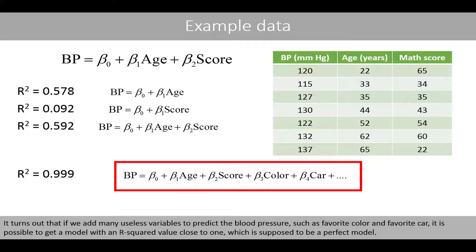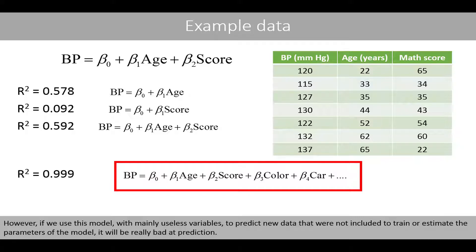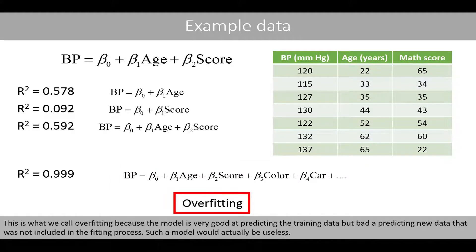It turns out that if we add many useless variables to predict the blood pressure, such as favorite color and favorite car, it is possible to get a model with an R-squared value close to 1, which is supposed to be a perfect model. However, if we use this model with mainly useless variables to predict new data that were not included to train or estimate the parameters of the model, it will be really bad at prediction. This is what we call overfitting, because the model is very good at predicting the training data, but bad at predicting new data. Such a model would actually be useless.